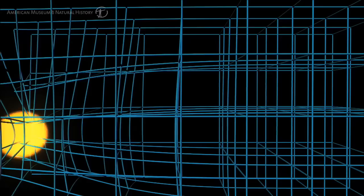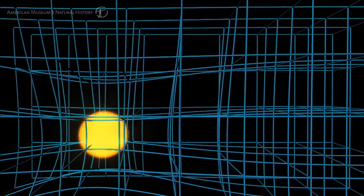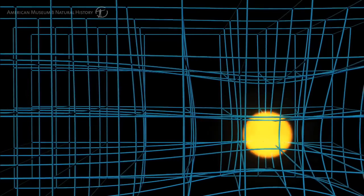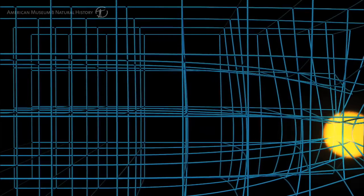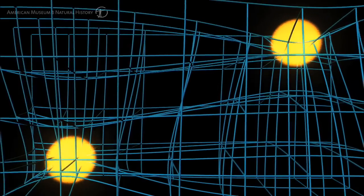Newton's description of gravity was basically that it was a force proportional to the masses of bodies and inversely proportional to the square of their separation. Einstein's concept was to look at the body's influence on the space they're embedded in.